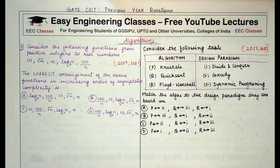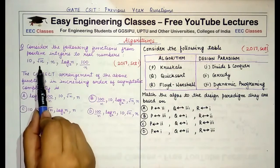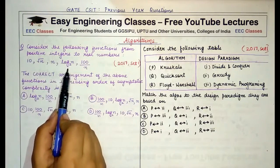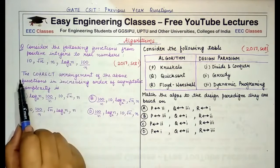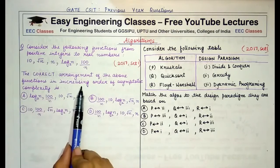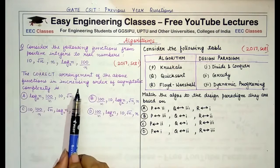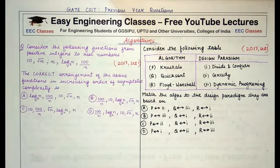The first question asks us to consider the following functions from positive integers to real numbers. We are given five options — 10, √n, n, log₂n, and 100/n — and we have to find the correct arrangement of these functions in increasing order of asymptotic complexity.